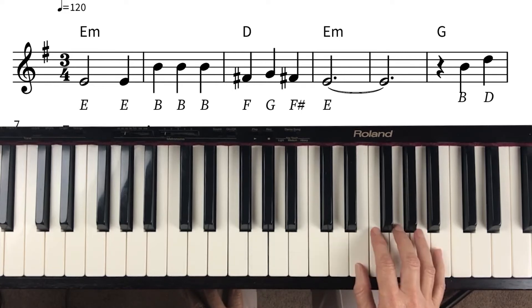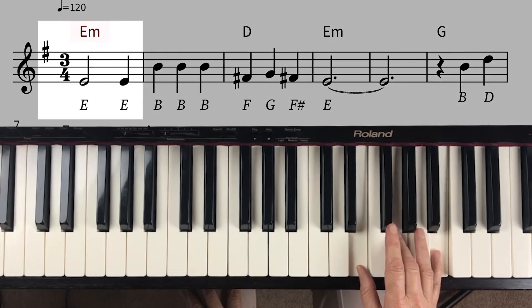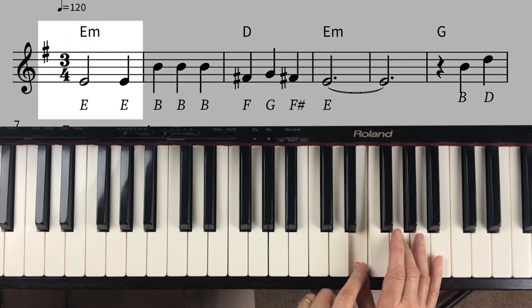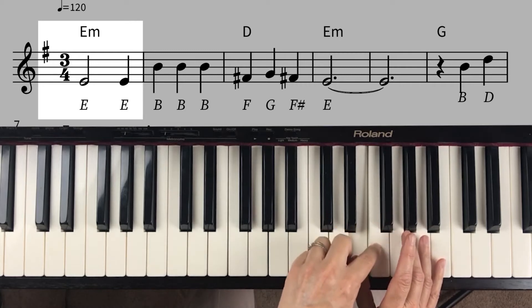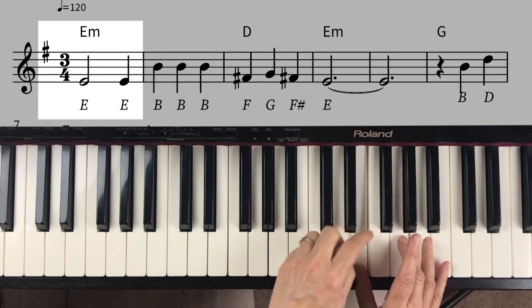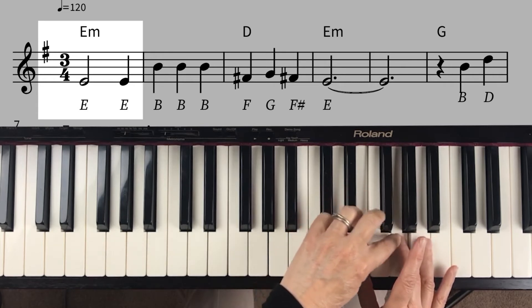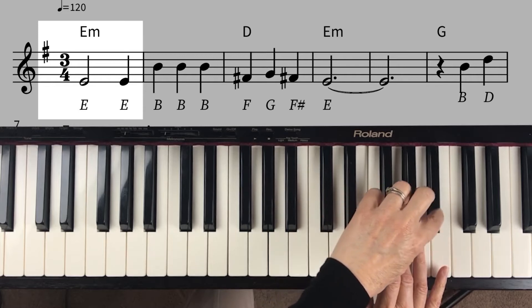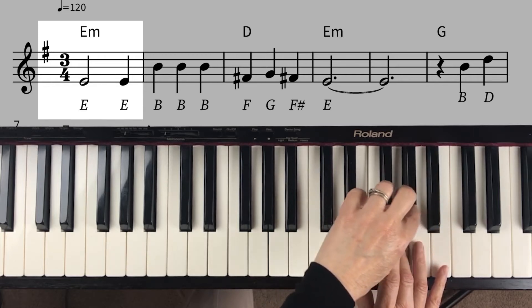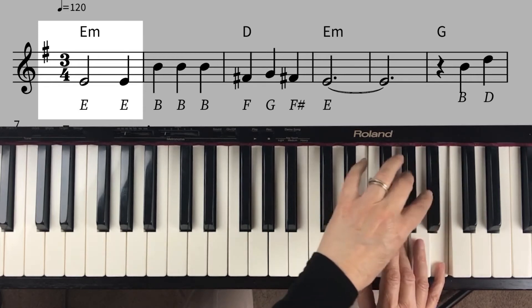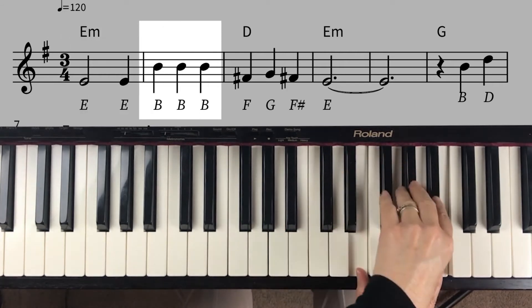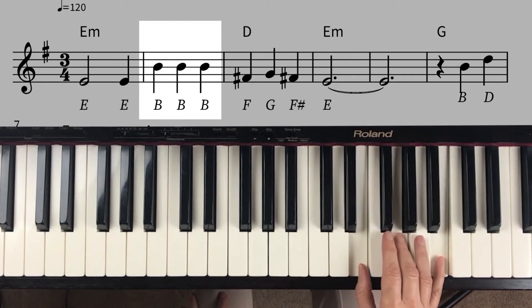So the first chord we're going to learn is E minor. You play your thumb with E, and then you skip two keys. You count up one, two, three, and that leaves you two keys that you skipped. Then you'll skip three keys on top: one, two, three, four. So remember, you skip two keys on the bottom and skip three keys on top. So here's E minor.